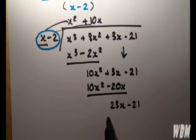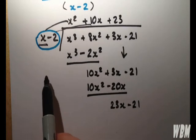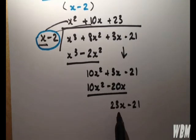Repeat the same process. x into 23x goes 23. Because 23 times by x gives 23x.